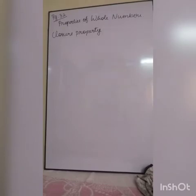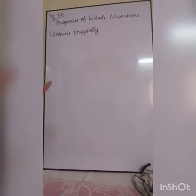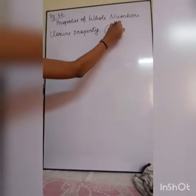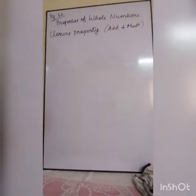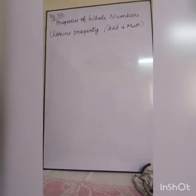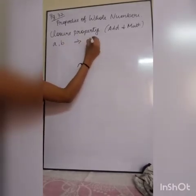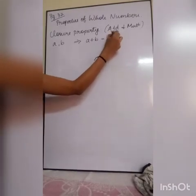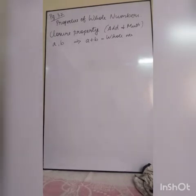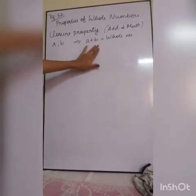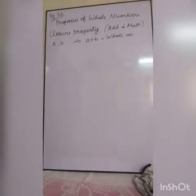What is the first property? We have already discussed the properties in our refreshing class session, so we are just going to recall it. The first property is the closure property. The closure property is satisfied under addition and multiplication only. I am taking two whole numbers A and B. If I add both, that value is also a whole number. If I add two whole numbers, my answer will always be a whole number — that is what the closure property is.